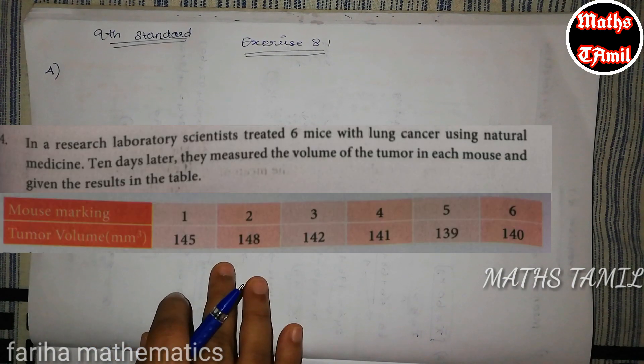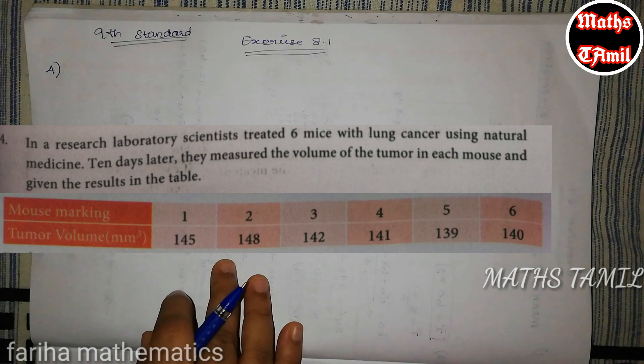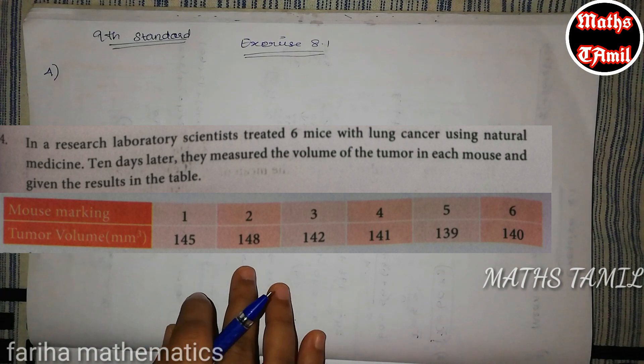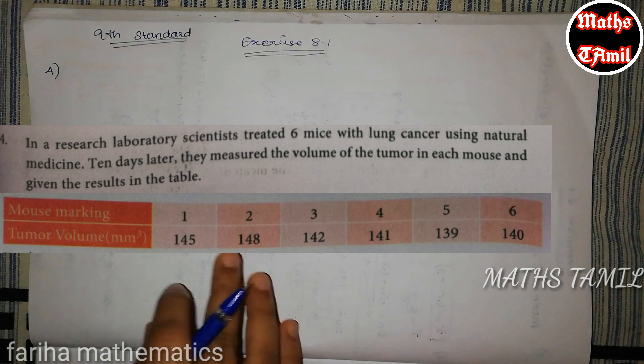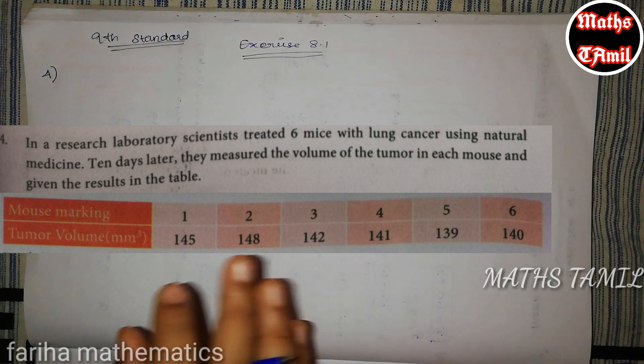I am reading the 4th question. In a research laboratory, scientists treated 6 mice with lung cancer using natural medicine. 10 days later, they measured the volume of the tumor in each mouse and given the result in the table. So, mouse marking 1, 2, 3, 4, 5, 6.